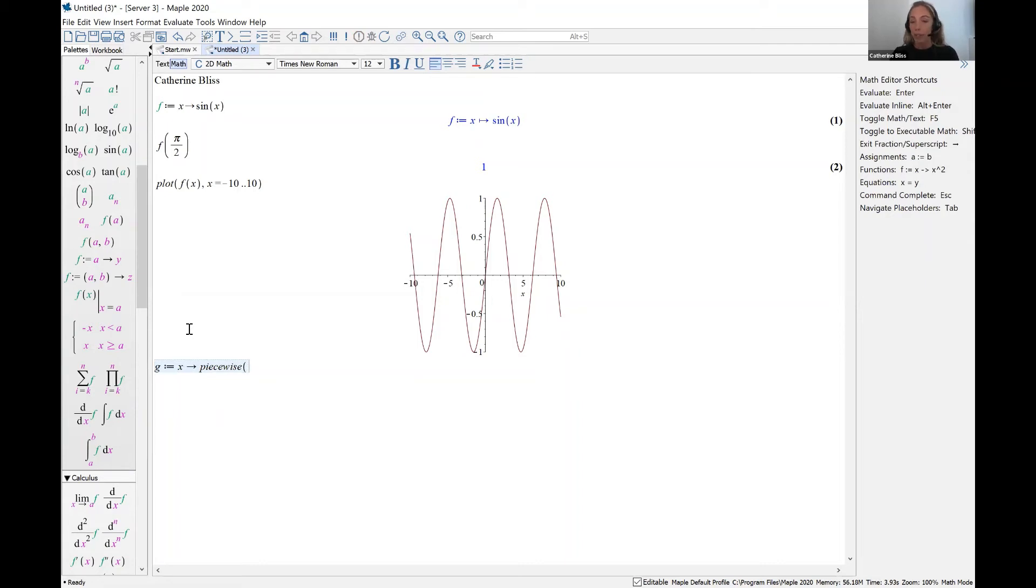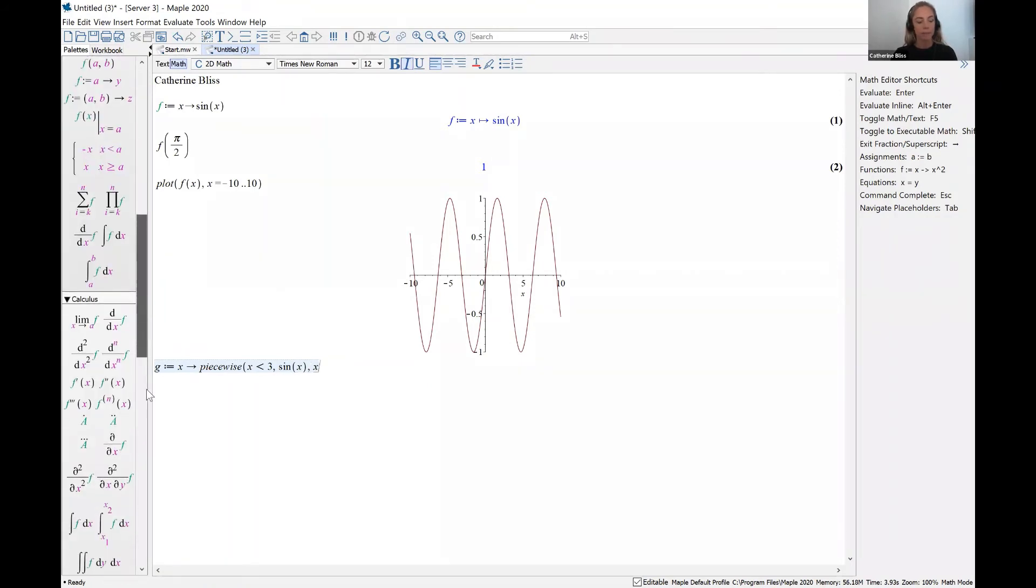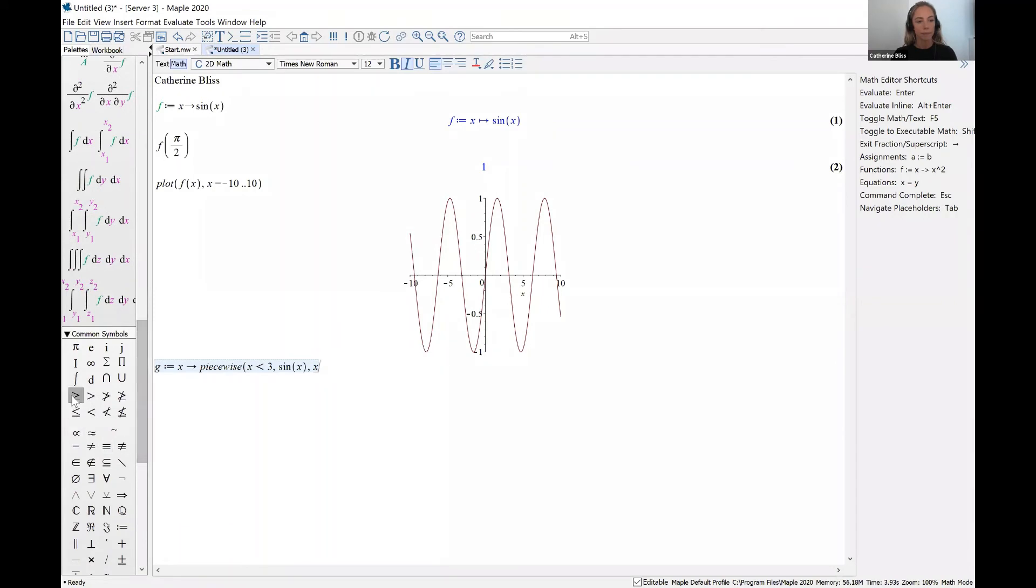The piecewise function that I will define says that when x is less than 3, I'll use the function sine of x. And when x is greater than or equal to 3, I'll use the function x squared. We can see that Maple did understand that I'm defining a piecewise function.